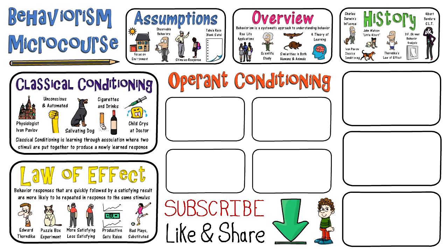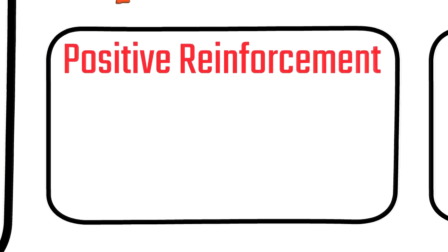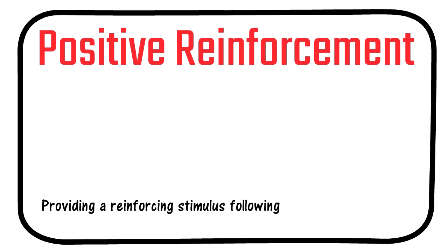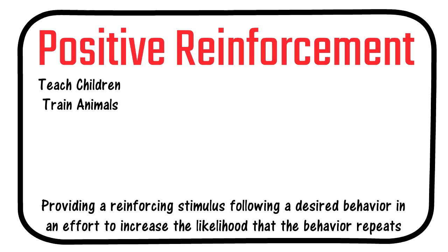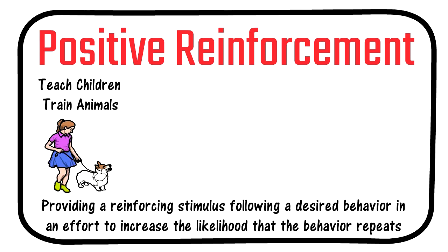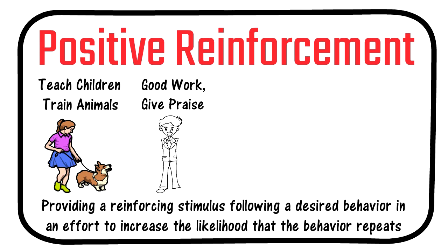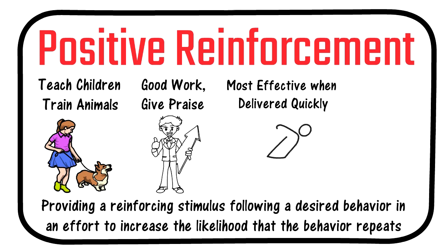Now let's take a look at operant conditioning, starting with its first type: positive reinforcement. Positive reinforcement is the providing of a reinforcing stimulus following a desired behavior in an effort to increase the likelihood that the behavior repeats in the future. It is often used in education to teach children and modify behavior, such as through positive behavior intervention systems, and is also used to train animals such as canine rescue dogs. A basic example is a teacher providing praise when a student does good work. Positive reinforcement is most effective when delivered quickly after the desired behavior takes place — praise should be given right after the student does good work, not days later.